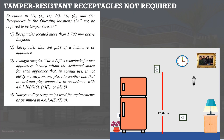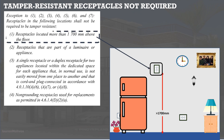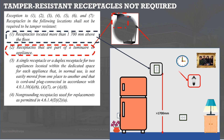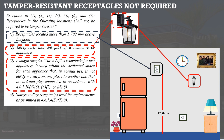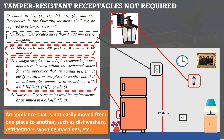Tamper resistant outlets are not required in the following locations: 1. receptacles located more than 1700 millimeters above the floor; 2. receptacles that are part of a luminaire or appliance; 3. a single receptacle or duplex receptacle for two appliances located within the dedicated space for each appliance that in normal use is not easily moved and is cord and plug connected — such as behind dishwashers, refrigerators, and washing machines; 4. non-grounding receptacles used for replacements.